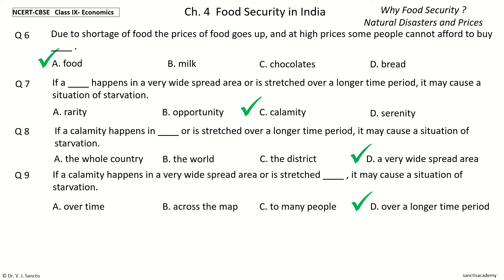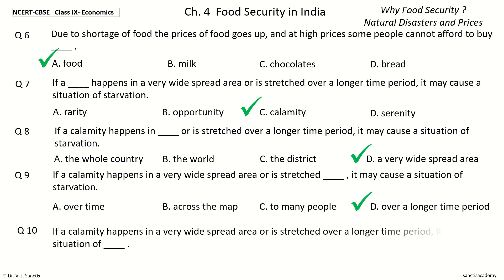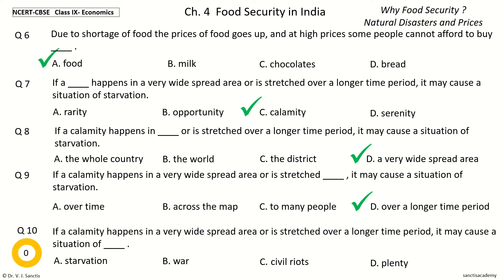Question 10: If a calamity happens in a very widespread area or is stretched over a longer time period, it may cause a situation of dash. The options are: starvation, war, civil rights, plenty. And the answer is starvation. So, if a calamity happens in a very widespread area or is stretched over a longer time period, it may cause a situation of starvation.